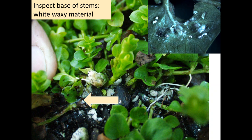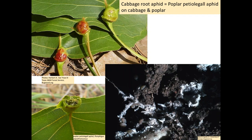These aphids have primary woody plant hosts in some cases. The cabbage root aphid, sometimes called the poplar petiole gall aphid, makes galls on different kinds of poplar trees. If you open up the galls you'll see the aphids inside, and the same aphid species also occurs on the roots of cabbage. It's good to keep in mind the alternate host cases when considering management implications.